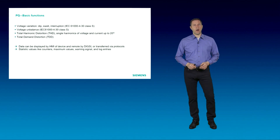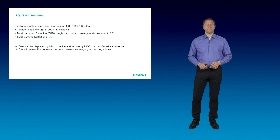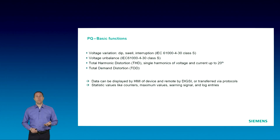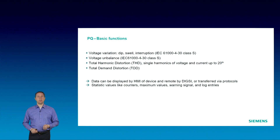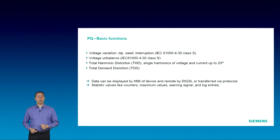PQ functions overview. It provides voltage variation — that is dips, swells and interruption — and voltage unbalances. These functions comply to the standard for power quality measurement IEC 61000-4-30 class S. And the total harmonic distortion, the THD.